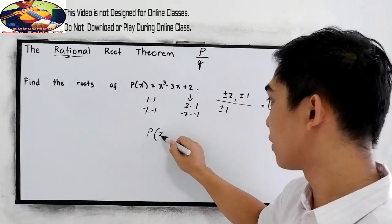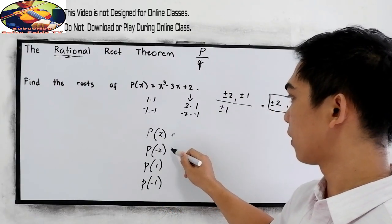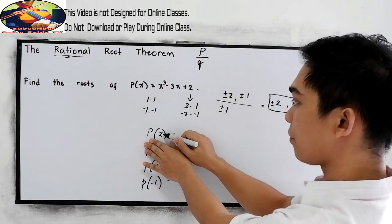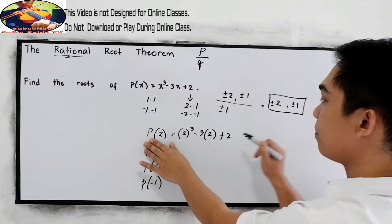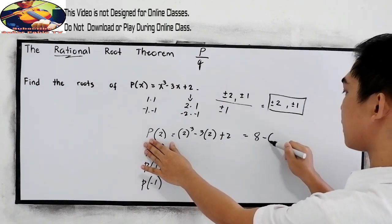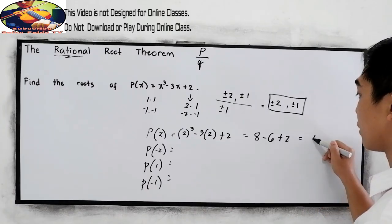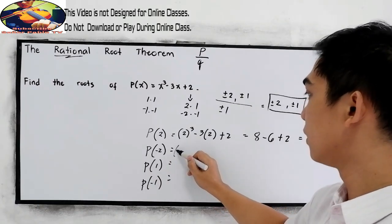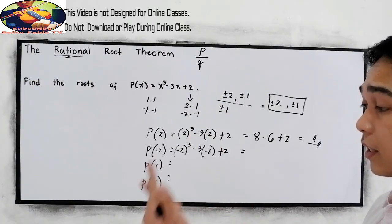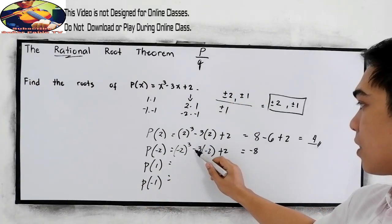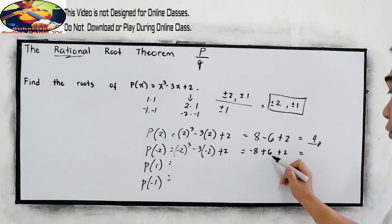After getting the possible rational roots, we substitute them into P(x) = x³ − 3x + 2. Let's try x = 2: 2³ − 3(2) + 2 = 8 − 6 + 2 = 4. Next, x = −2: (−2)³ − 3(−2) + 2 = −8 + 6 + 2 = 0.